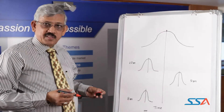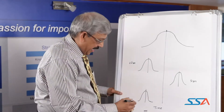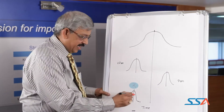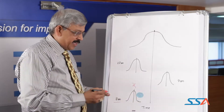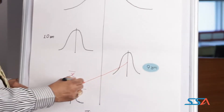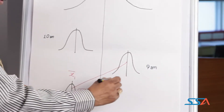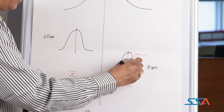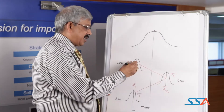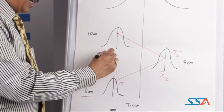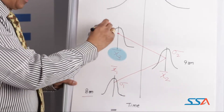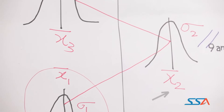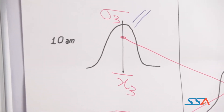Let's look at the holistic picture of how this process is going to behave. At 8 o'clock the process has a mean value of X1 bar and standard deviation sigma 1. At 9 o'clock it has moved to mean X2 bar and standard deviation sigma 2. At 10 o'clock it has moved again to mean X3 bar and standard deviation sigma 3. The process keeps shifting and drifting over time when we have not noticed and taken a subgroup sample.